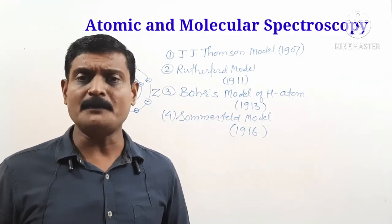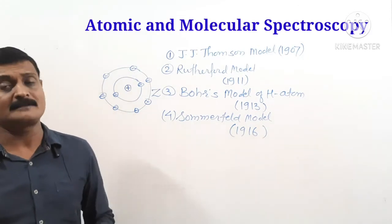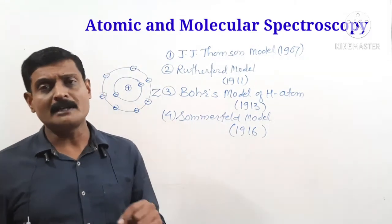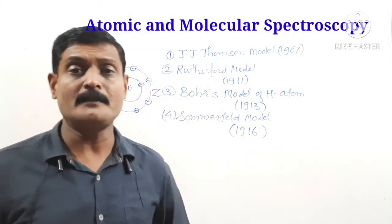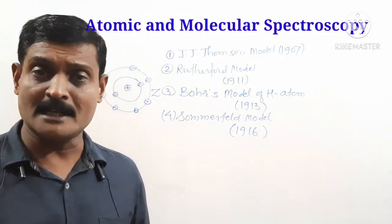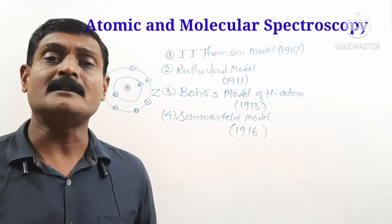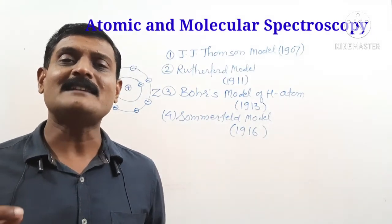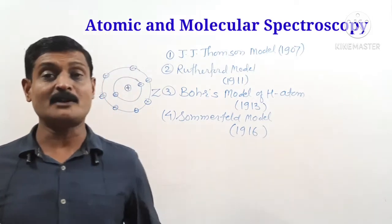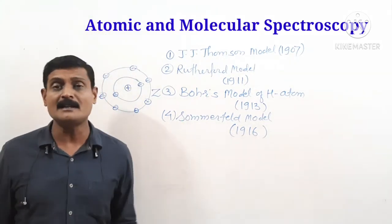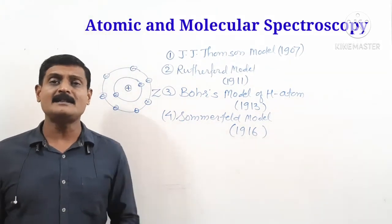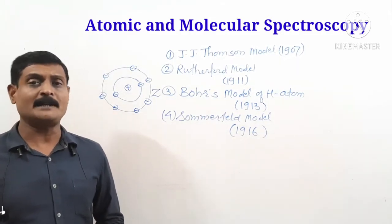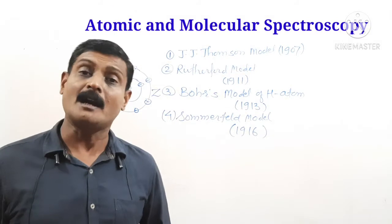However, the Rutherford atomic model has drawbacks. According to this model, an electron revolves around the nucleus in a stable circular orbit. Since the electron is a charged particle performing uniform circular motion, it is an accelerating charged particle. An accelerating charged particle emits energy in the form of electromagnetic radiation continuously.